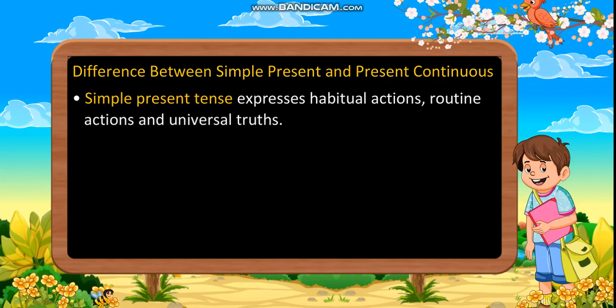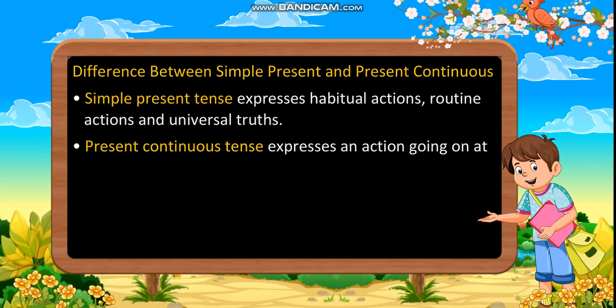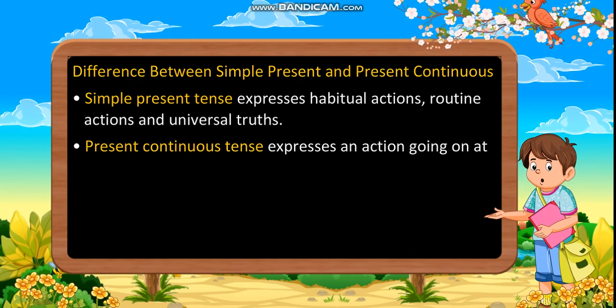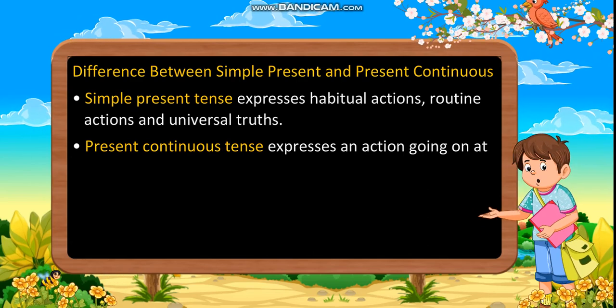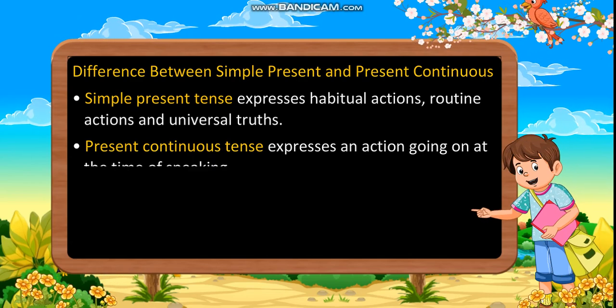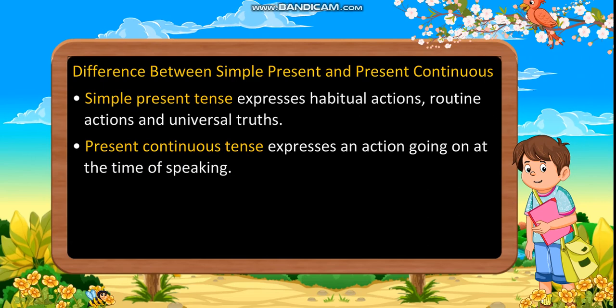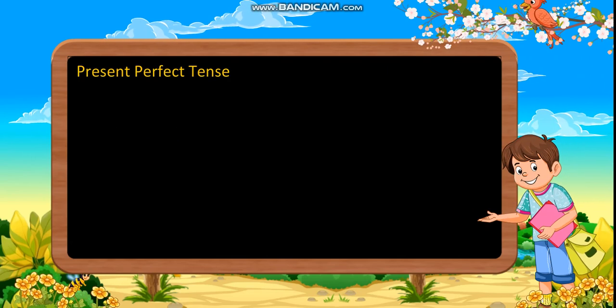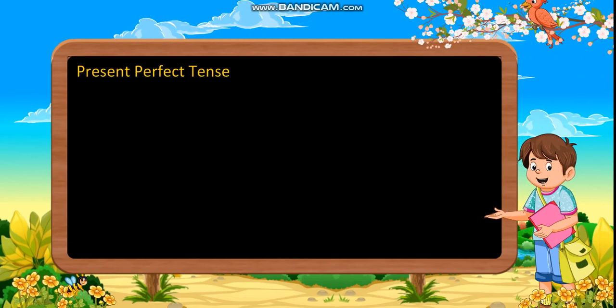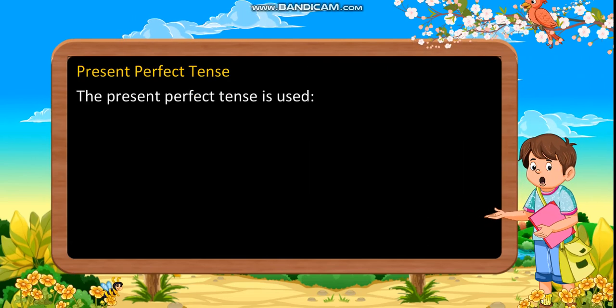Difference between simple present and present continuous: Simple present tense expresses habitual actions, routine actions, and universal truths. Present continuous tense expresses an action going on at the time of speaking.